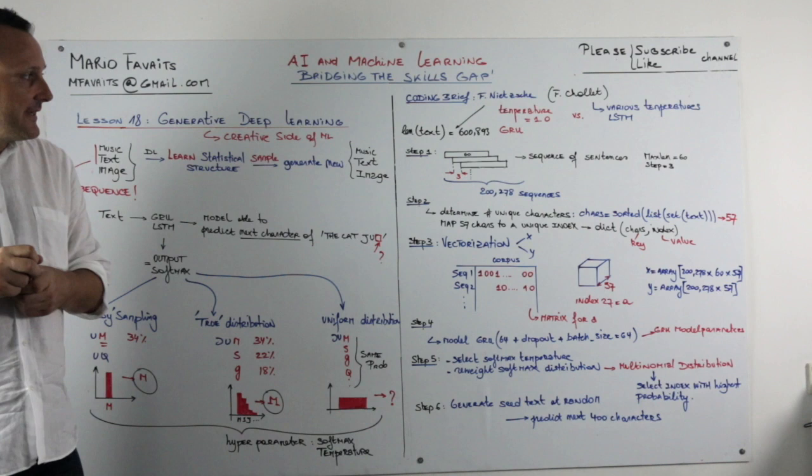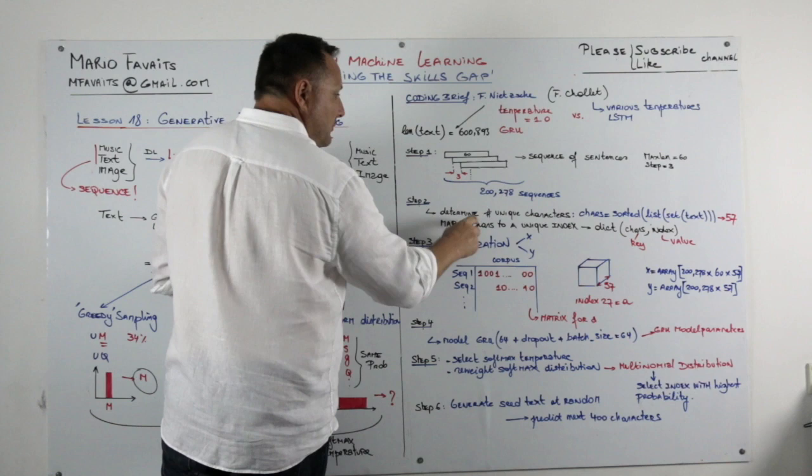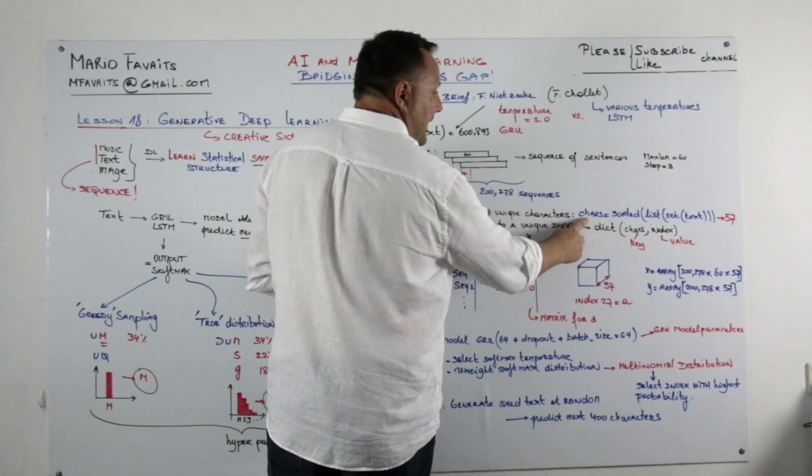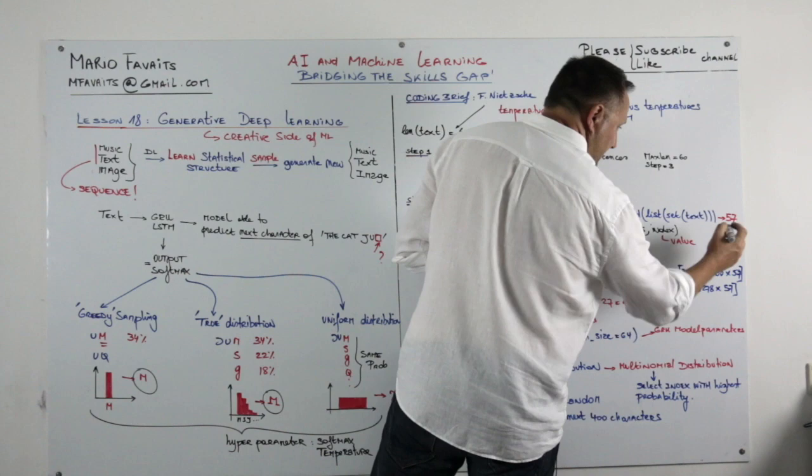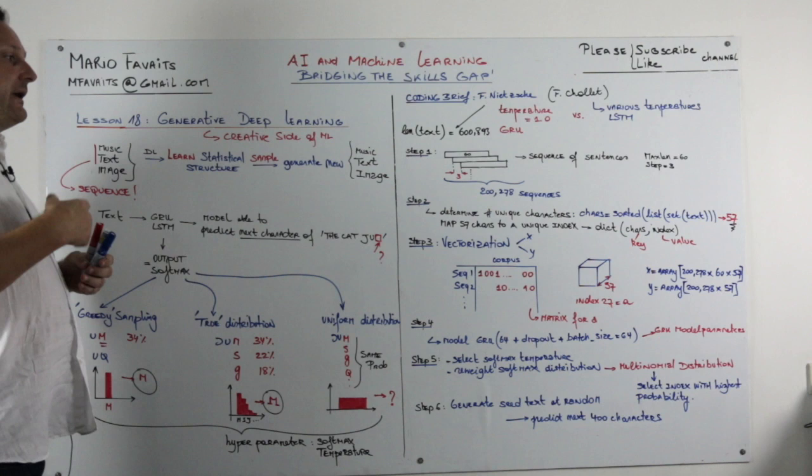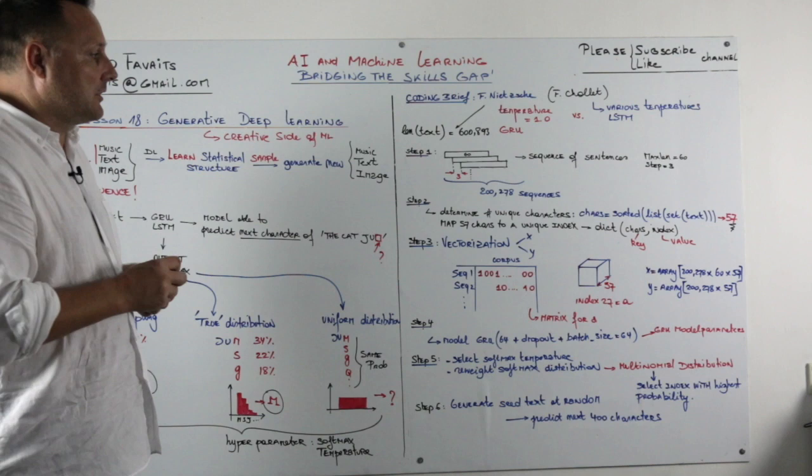In the next step, we are going to determine what the unique characters are in this text. We are going to use this one line of Python code, and we will find out that the number of unique characters in that text is 57. You have the 26 for alphabet, you have point, exclamation point, question mark, and so on. So there is more than 26.